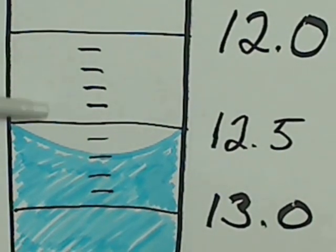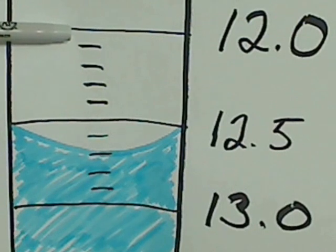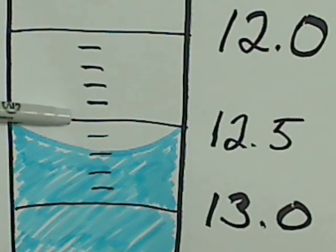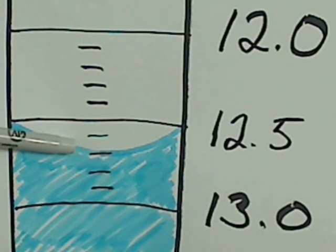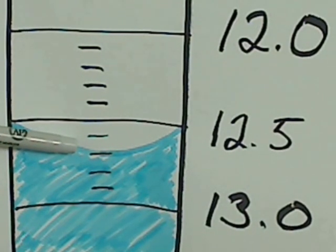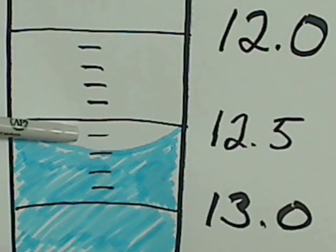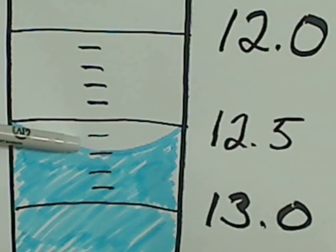So this meniscus right here is going to be 12.6, almost 12.7, but if you can estimate that last digit, I would actually estimate this as 12.69 milliliters.